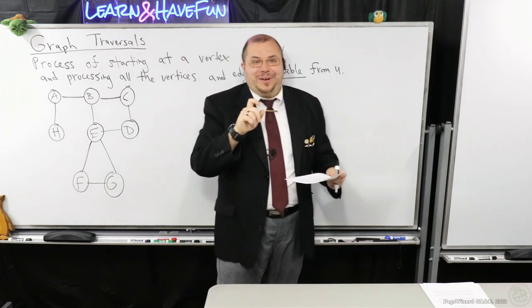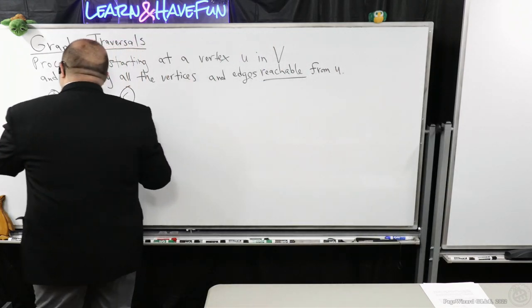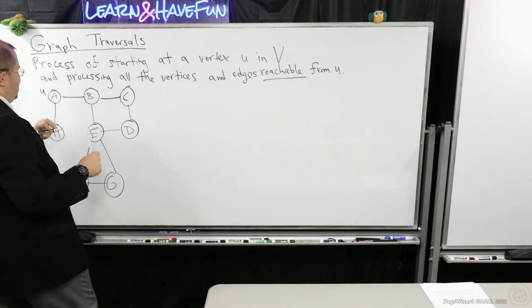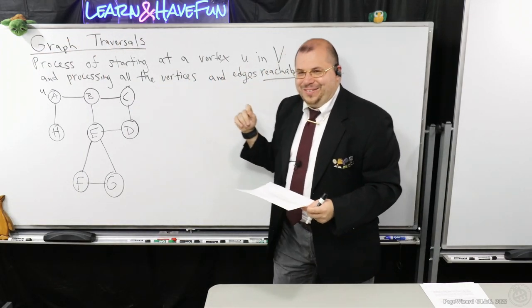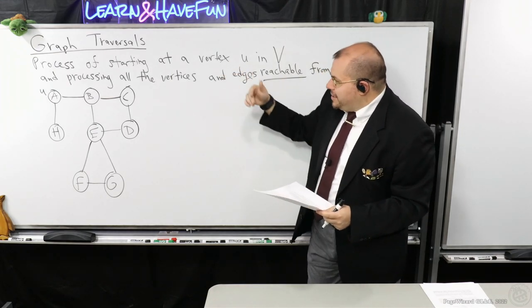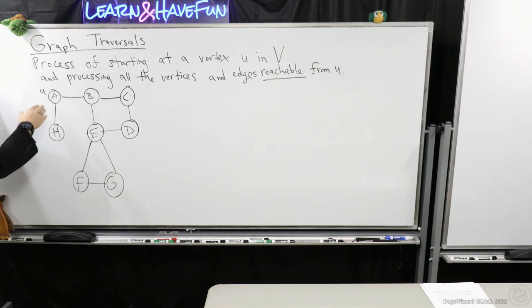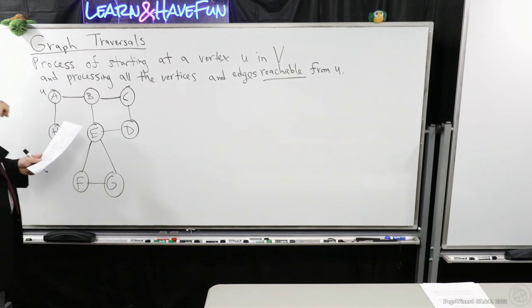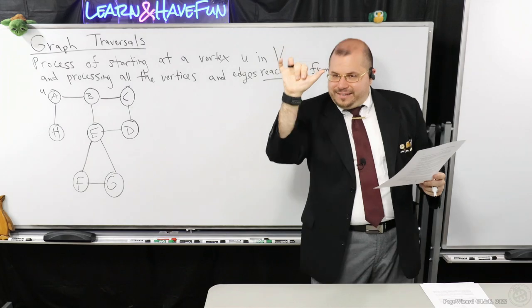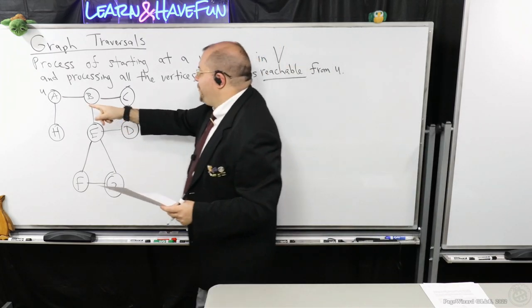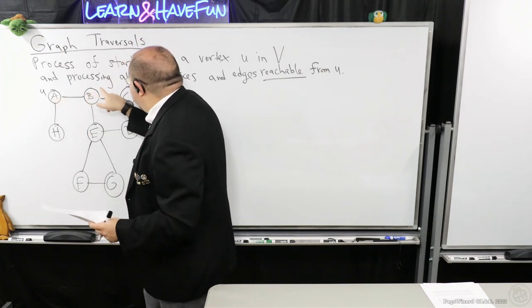I must stress that this is an undirected graph, but the concepts I'm going to talk about here apply whether it's a directed or undirected graph. Suppose I have some vertex U — suppose A is U. In a previous lesson, I talked about what a path is: it's just a sequence of vertices where each one is connected by an incident edge. So A, B, and C is a path.